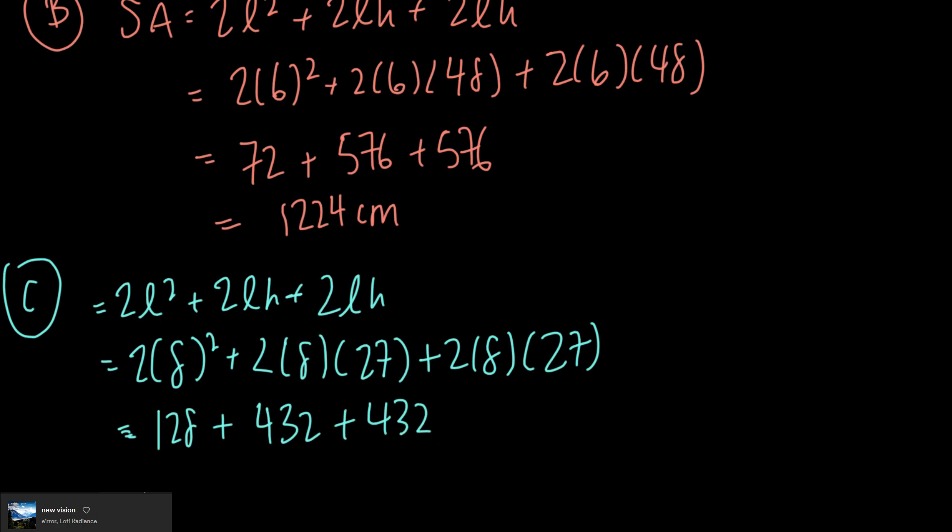8² is 64 times 2 is 128 plus 2 times 8 times 27 is 432 and 432. So I can add all those up: 128 plus 432 plus 432 equals 992. In this case, C actually has my lowest surface area, but let's check for D now.